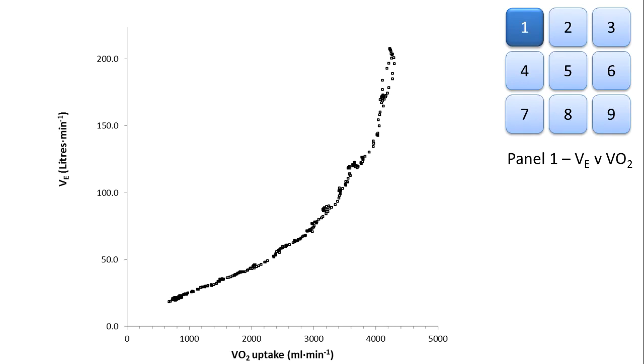This is panel 1 of the Wasserman 9 panel plot. Minute ventilation against oxygen uptake, with V on the Y axis and VO2 on the X axis.